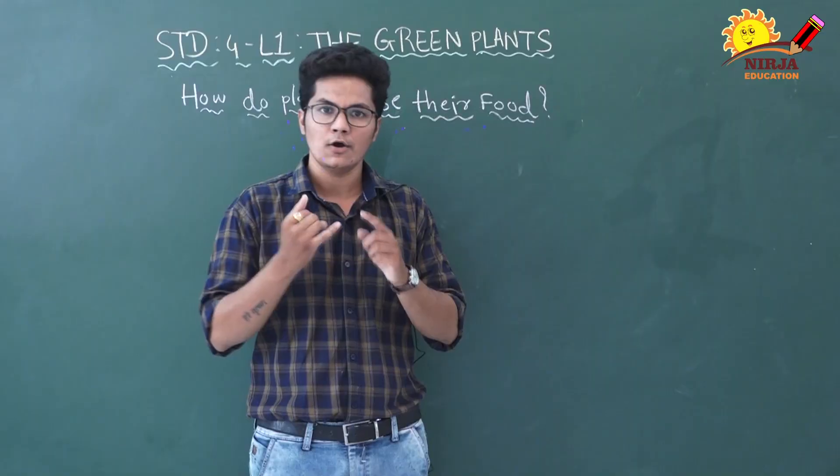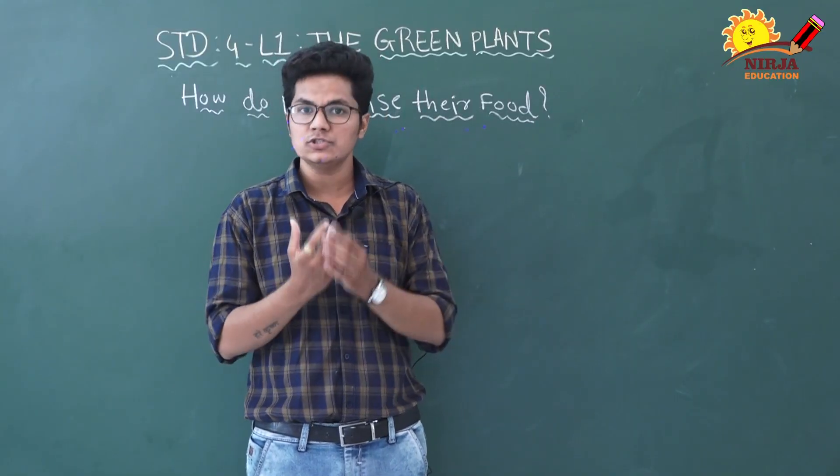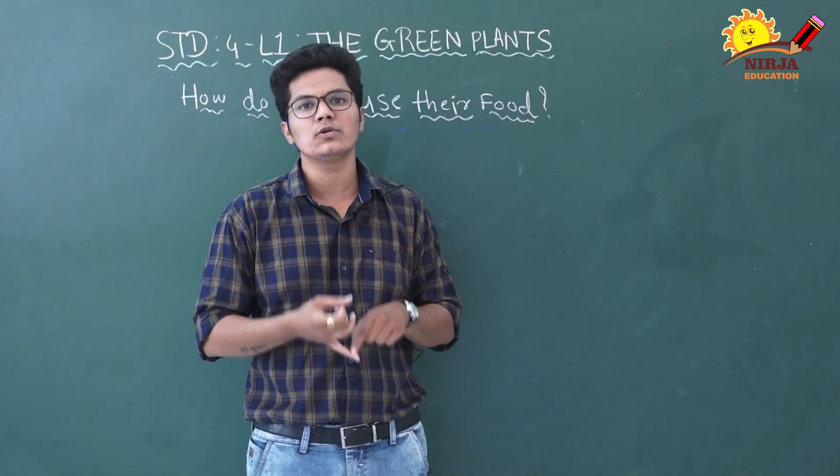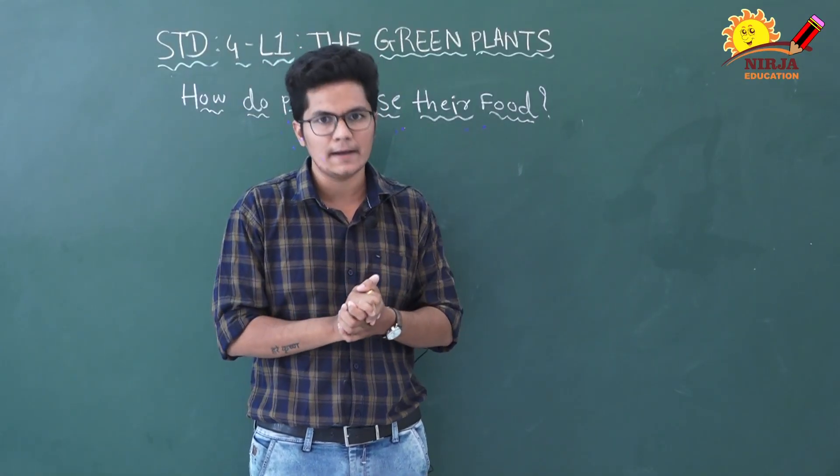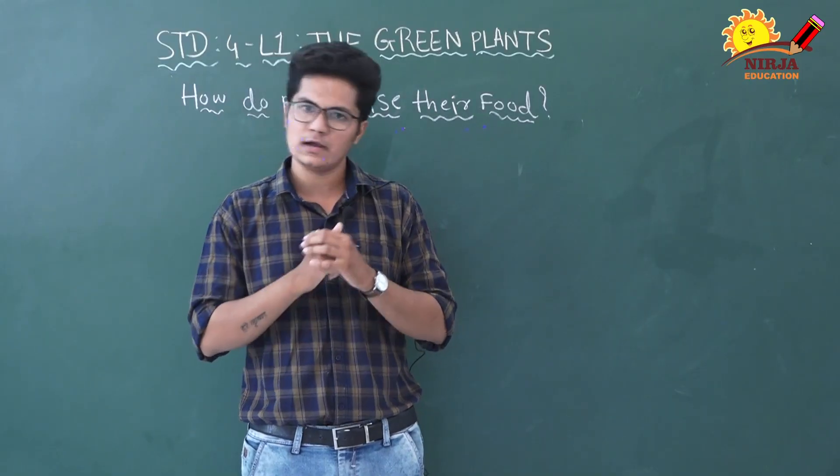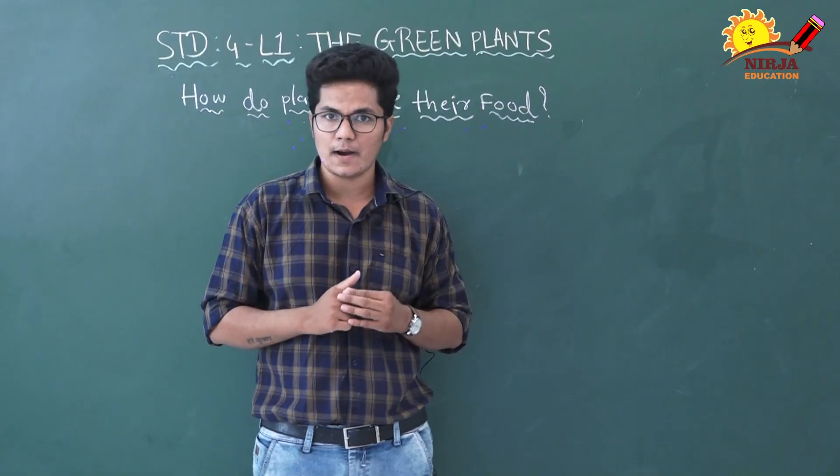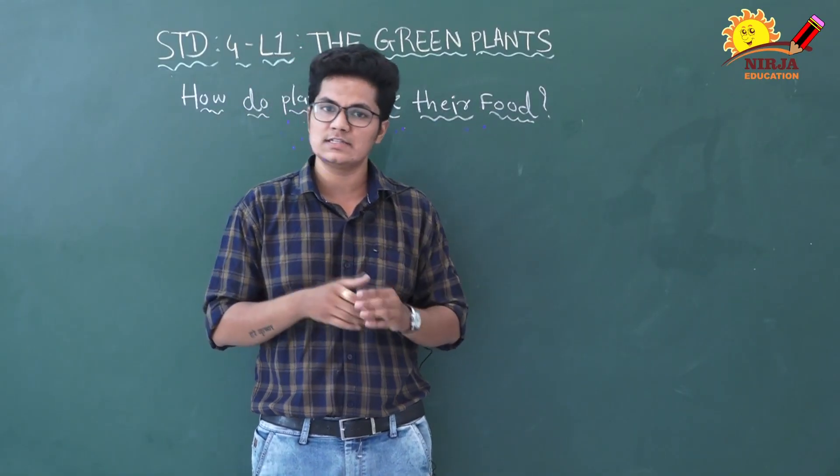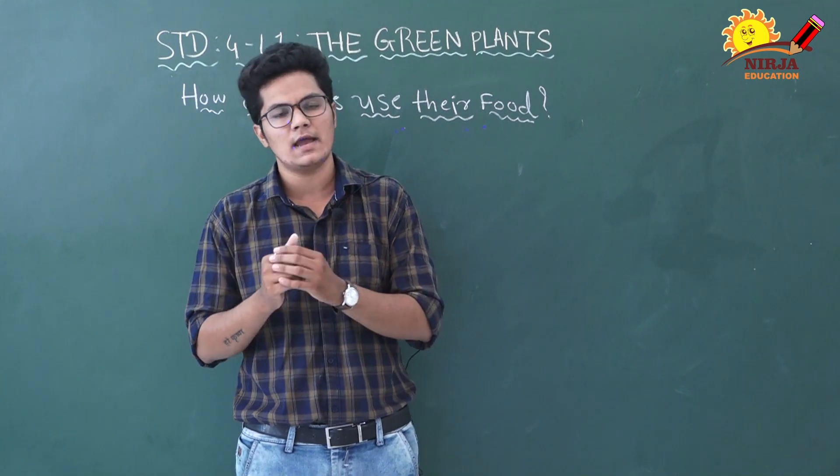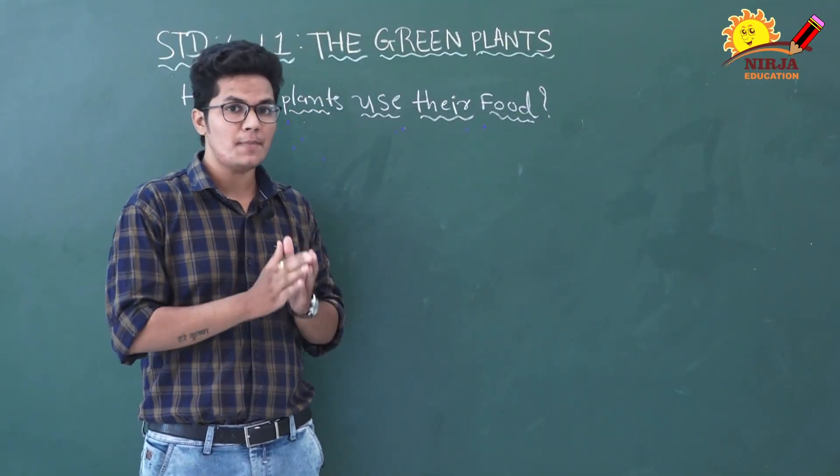The starch is also stored in roots, stems, fruits and leaves. Some food is also used to repair damaged parts. The food stored in stem, roots, leaves, fruits and seeds are eaten by animals and human beings.